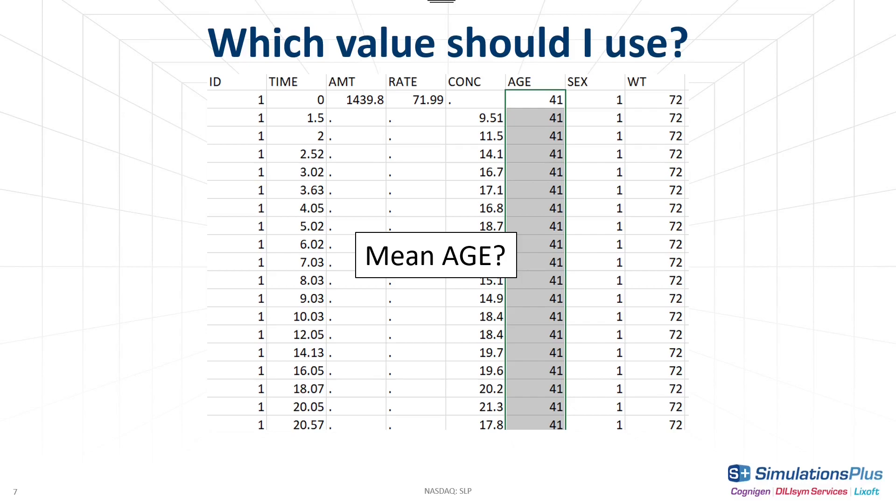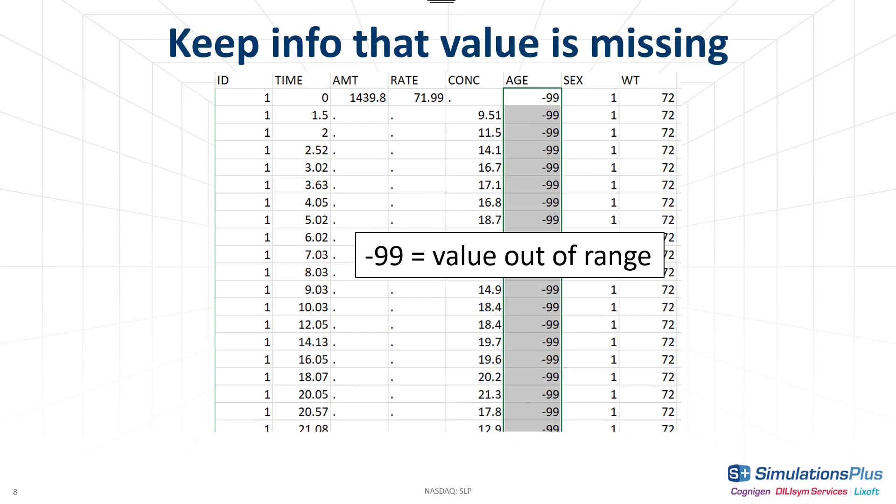So will this imputed value influence my covariate effects? I don't want to modify the data each time I test a hypothesis, so the trick here is to instead give a value that is out of range for the covariate, for example a negative value, let's say minus 99. This way I keep the information that this value is missing in my dataset.